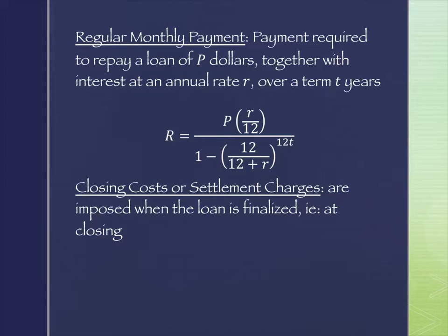Regular monthly payments — this is new, we've not seen how to calculate this before. The payment required to repay a loan of P dollars, together with interest at an annual rate R percent, over a term of T years, is calculated by: P times (R divided by 12), all divided by 1 minus (12 divided by (12 + R)) raised to the 12T power. We need to be very cautious with our calculator to make sure it does operations in the right order.